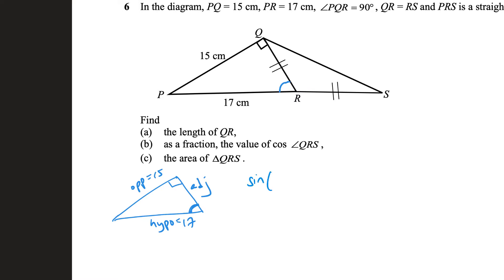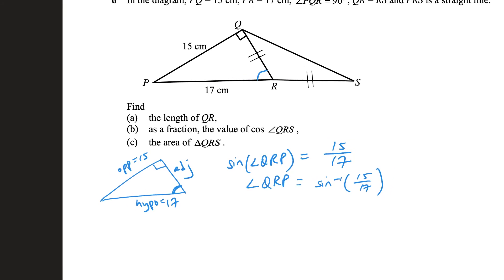I can say sine of this angle QRP is simply opposite over hypotenuse. And so, angle QRP itself is equal to sine inverse 15 over 17. Why is that useful? Because I can say that cosine of QRP, because this is what I'm looking for. I'm looking for QR. I can say cosine of QRP is adjacent over hypotenuse, which is QR, what I'm looking for, over 15.